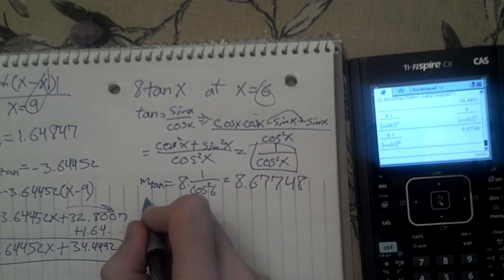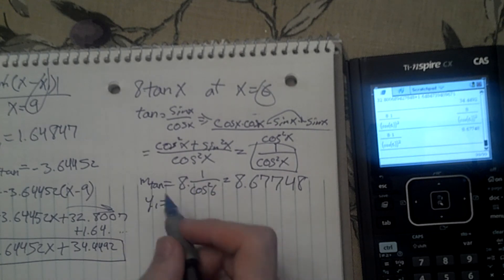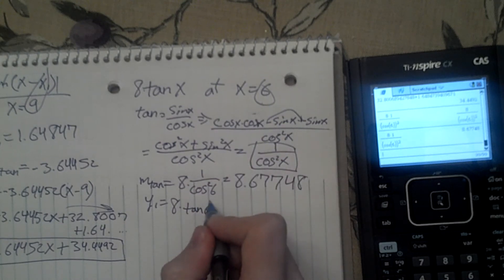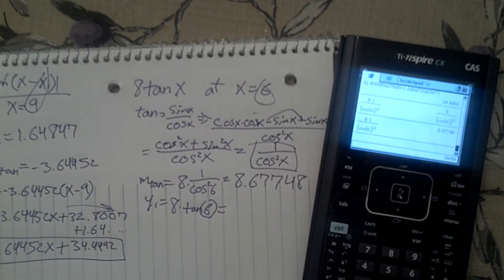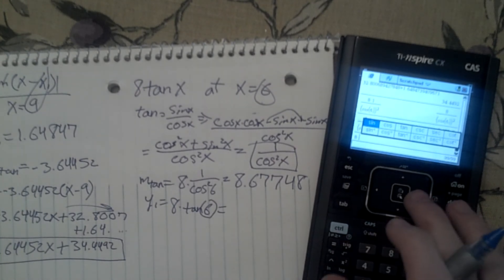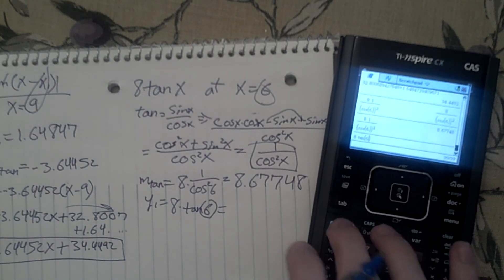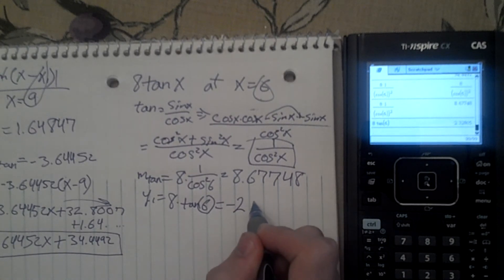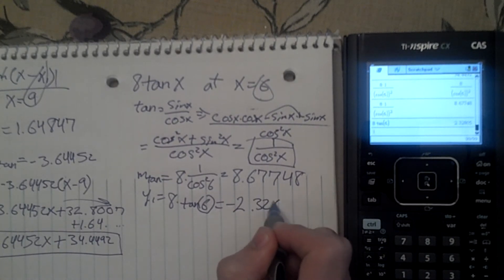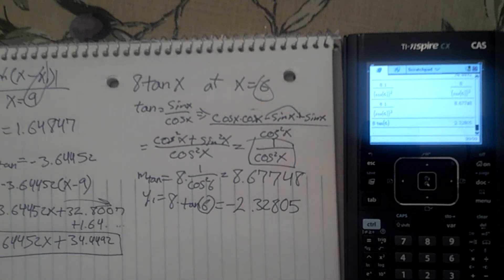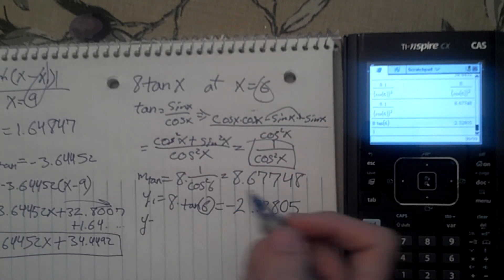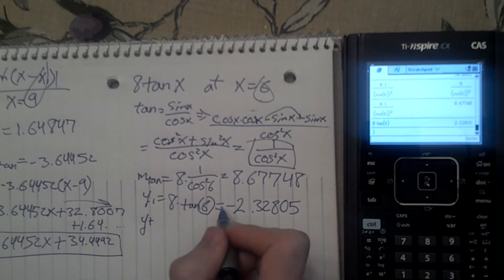Now we need to find our y1, which is 8 times tangent of 6. Put that into the calculator. 8 times tangent of 6 gives us negative 2.32805. Then we have our x is 6, so x1 is 6. We're going to plug all this in. y minus, well, in this case plus 2.32805.